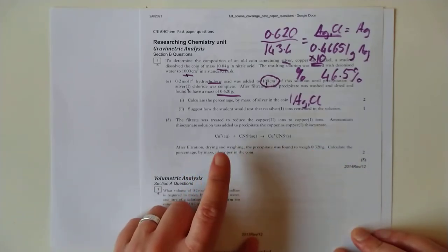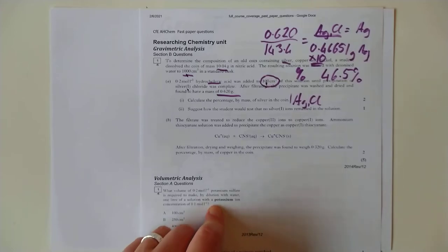So copper 1 plus thiocyanate makes solid copper-thiocyanate complex. Filtered dry and weigh it was found to be 0.32. This time they want the calculation of copper in the coin. It's precisely the same thing. Let's do it anyway though. Let's do it anyway.